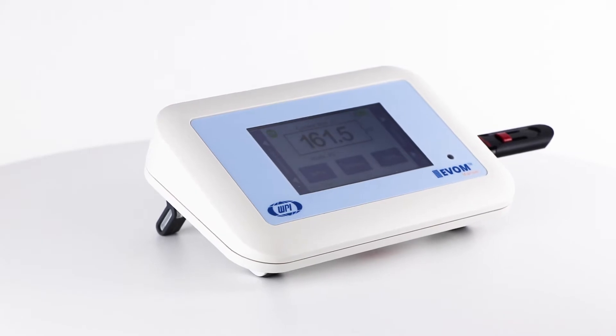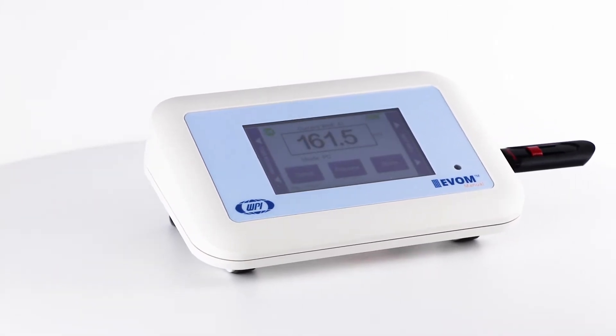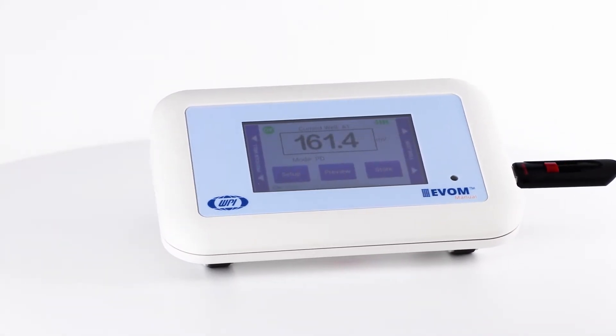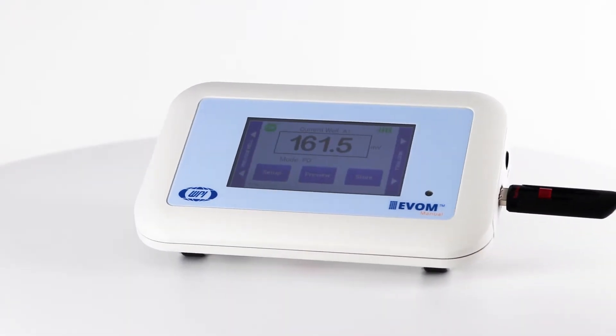Evon Manual is WPI's newest instrument to measure transepithelial electrical resistance. Let's look at how to set it up and take resistance measurements.